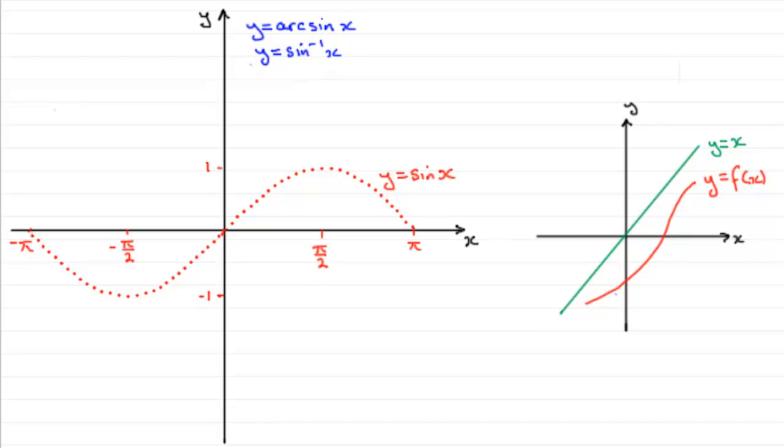For something like this, it's going to look like this: y equals f to the minus 1 of x, the inverse of f of x. So all we need to do is reflect y equals sine x in the line y equals x. And what do we get? We get this graph.